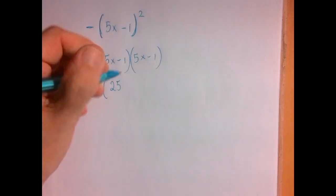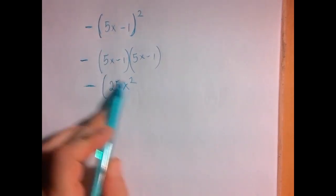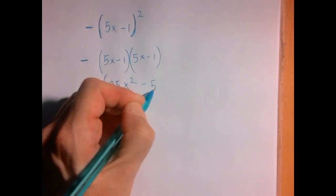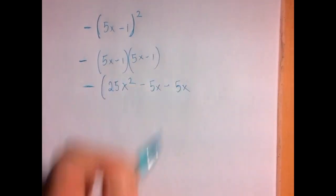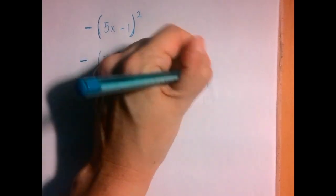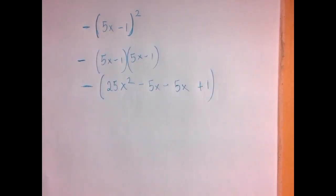5x times 5x is 25x squared. 5x times negative 1 is minus 5x. Negative 1 times 5x is another minus 5x. And negative 1 times negative 1 is plus 1. Then we can combine like terms.